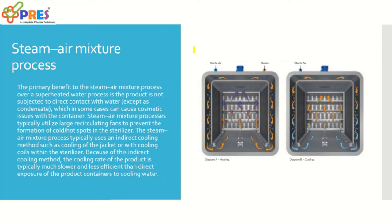This is a typical demonstration of the steam air mixture process. You can see the sterile air and steam inlet during the heating process, getting mixed with the help of the fan, ensuring homogeneity within the chamber and proper temperature distribution and penetration within the product vials or packaging materials. During cooling, sterile air is introduced to help cool down the temperature of the container.